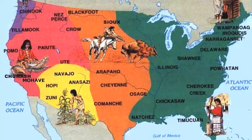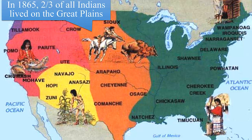Here is a map of the major North American tribes, at least in the United States. By 1865, the end of the Civil War, two-thirds of all Native Americans lived on the Great Plains. They had been moved to the west of the Mississippi from the first 400 years or so of European settlement, so that they were concentrated in the west.